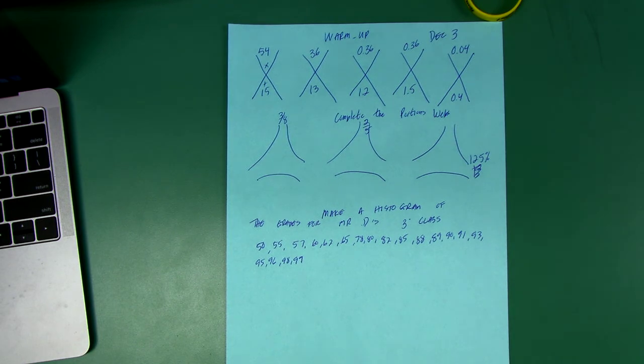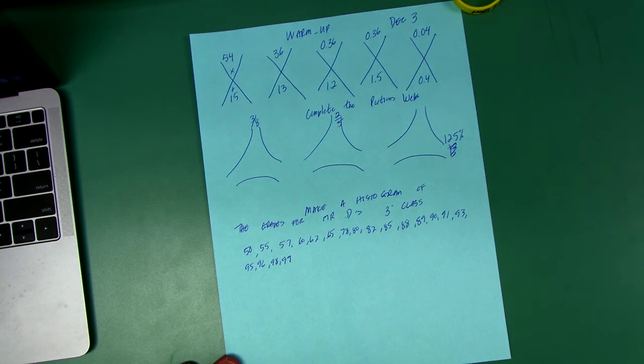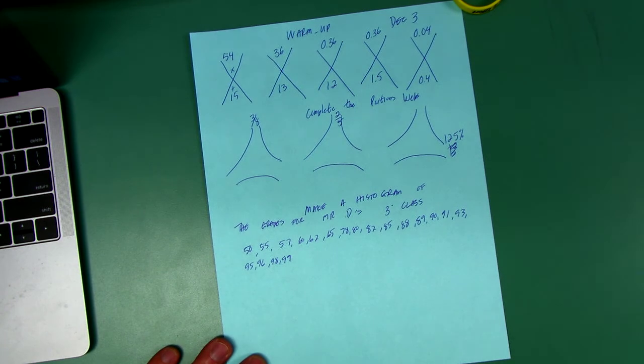You've got three portion webs to complete, and I want you to make a histogram. Pretend like this is Mr. Daniel's grades for my third period class, and make a histogram of the F's, D's, C's, B's, and A's.